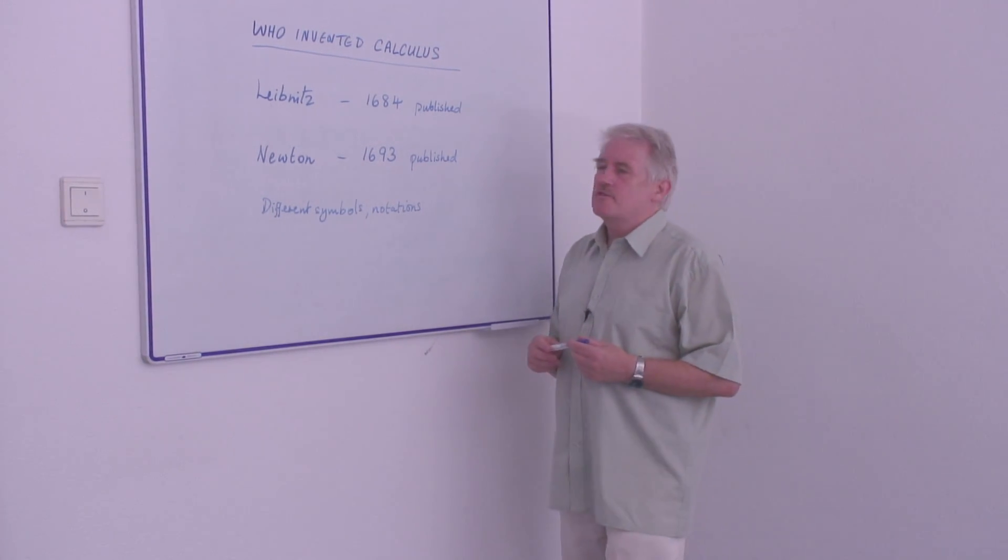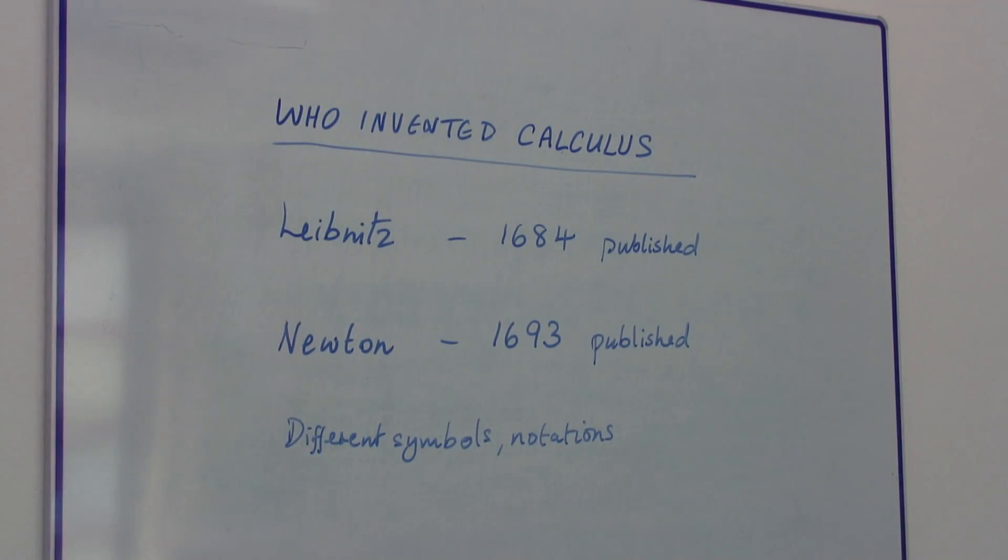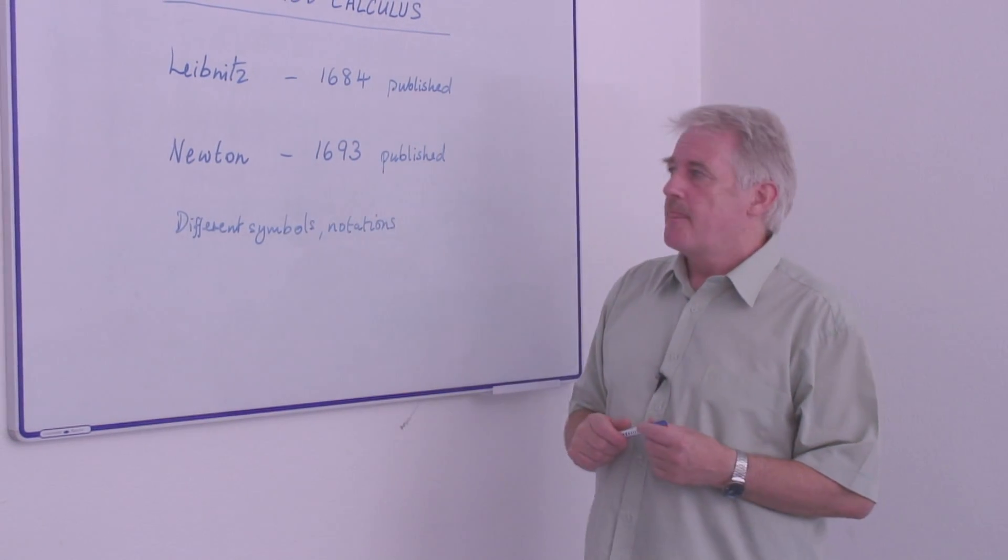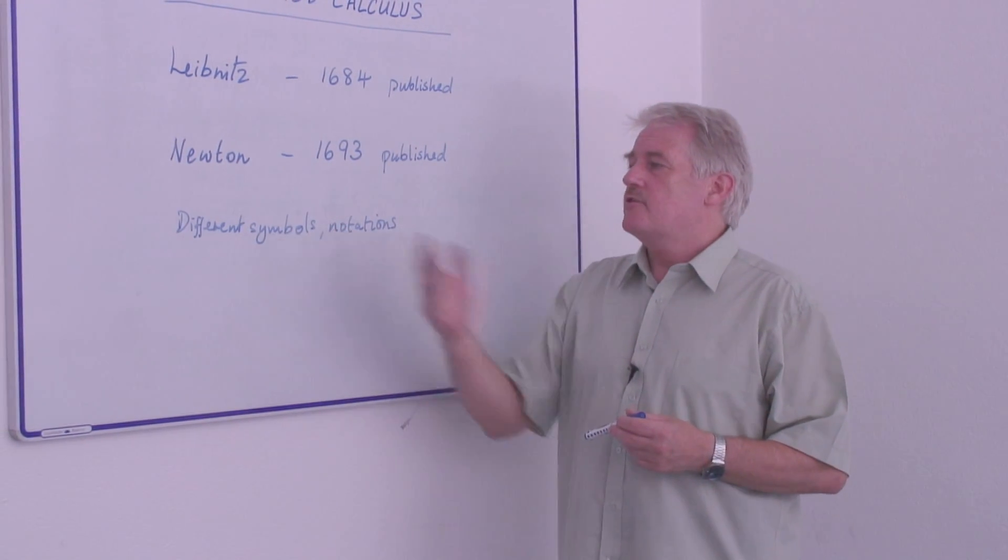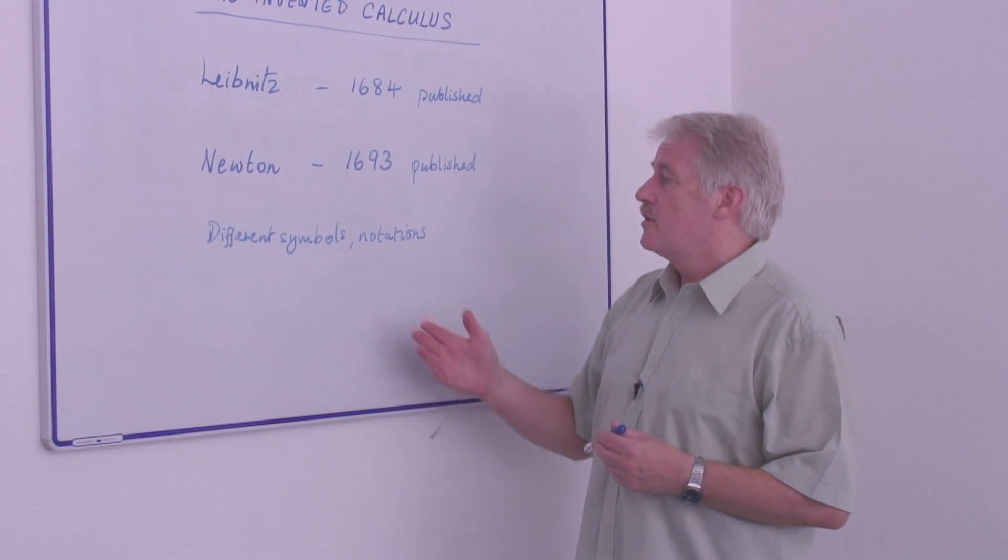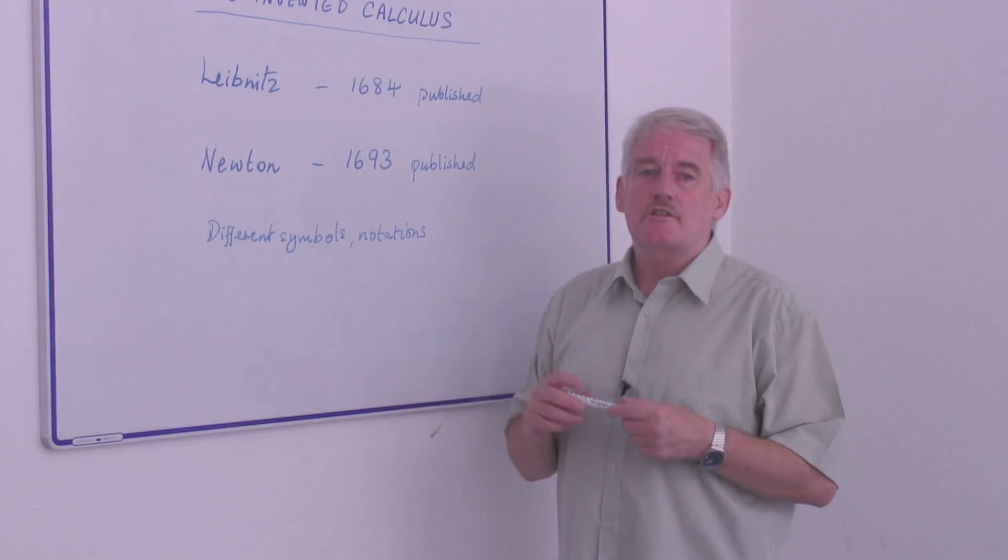The two characters who appear most are Leibniz and Newton. Newton of course from Britain and Leibniz was German. The interesting thing is that both of these mathematicians used totally different symbols, totally different notation, and yet basically came to the same conclusions.